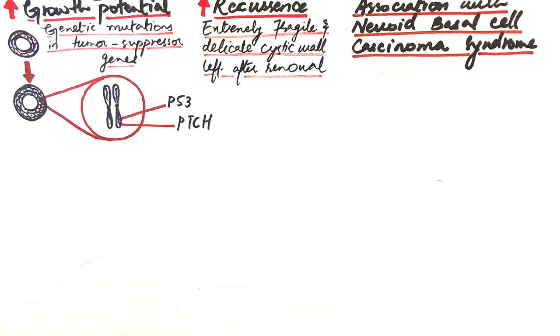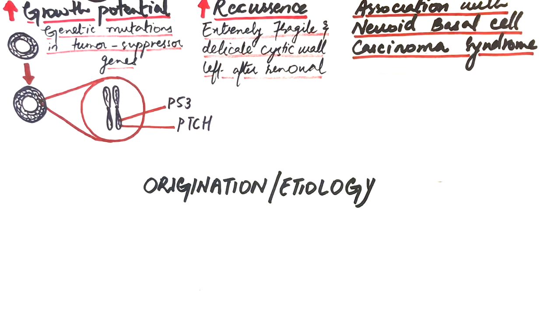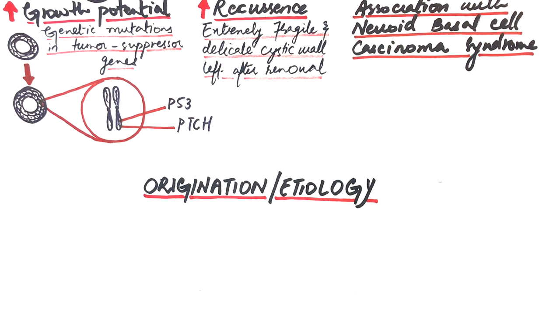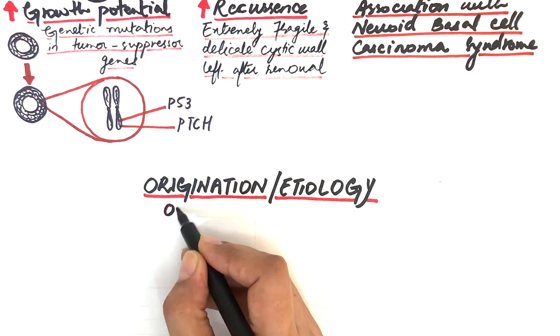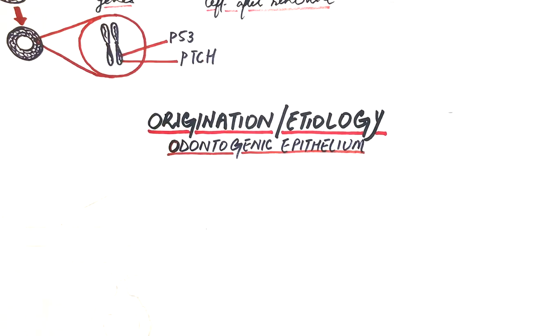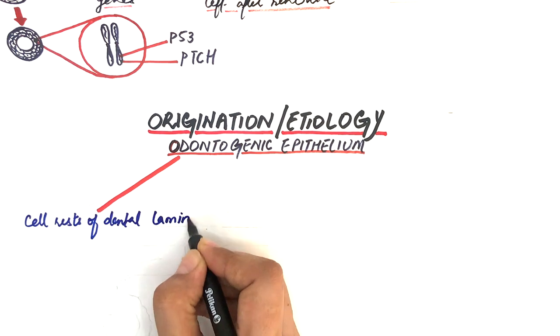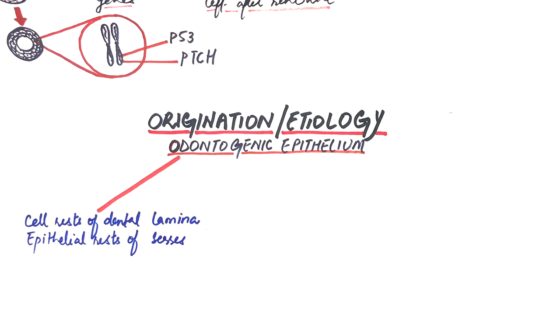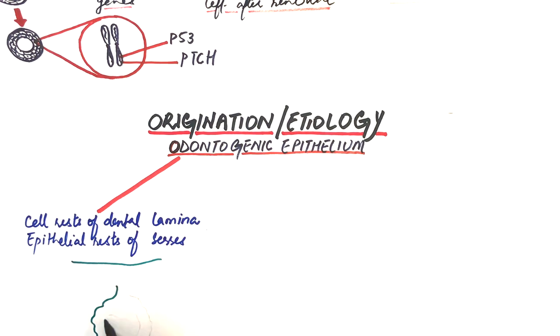Let's look at the origination or etiology of the cyst. The cyst originates from odontogenic epithelium, which is the epithelium that aids in tooth formation. The cyst is thought to arise mainly from the cell rests of the dental lamina, called epithelial rests of Serres, left after dental lamina detaches from the oral epithelium in the late bell stage of tooth formation.